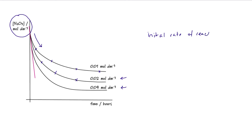For each concentration, we're interested in finding the initial rate of reaction — that is the rate of reaction when t equals 0. So if we draw a tangent against each of our curves at t equals 0, I've drawn in the pink line for the 0.04 mol dm⁻³ concentration. We work out the gradient or slope of that line — that's the change in y over the change in x — which gives us the initial rate of reaction for that concentration.